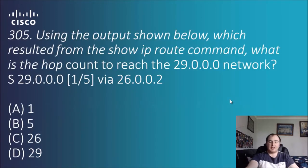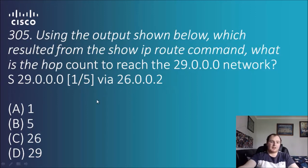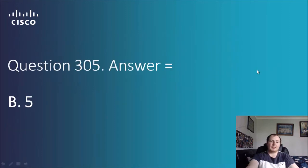Question 305: using the output shown below from the show IP route command, what is the hop count to reach the 29 network? We've got a static entry for the 29 network: 1/25 via 26.0.0.2. It's just a matter of reading the numbers in the output. The first number is the administrative distance, and the answer is B: 5 — meaning there are five hops between point A and point B.